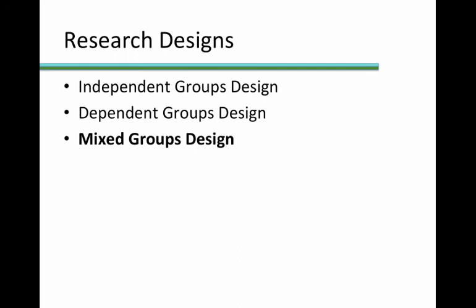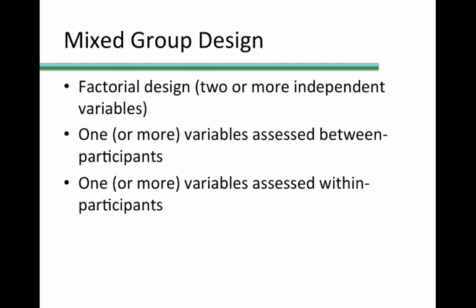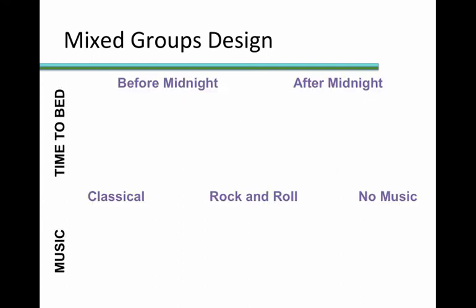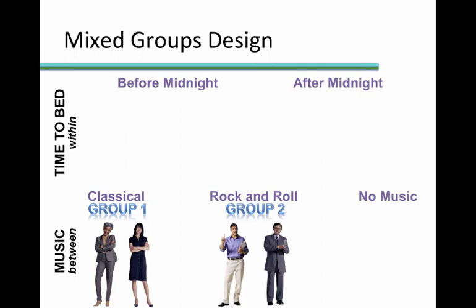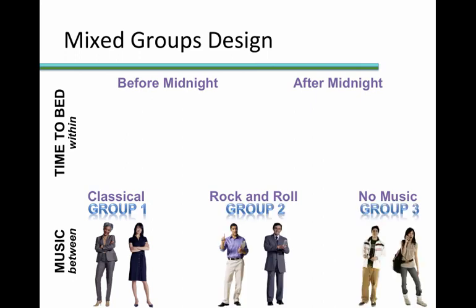Let's now talk about mixed group design. Sometimes we have study designs in which one or more variables are assessed between participants, as in an independent groups design, and another variable or variables assessed within participants, as in a dependent groups design. This is referred to as a mixed design. For example, we may assess music type between participants and time to bed within participants. This means we would have three groups of participants, one for each music type condition, and each participant would experience both conditions of the time to bed variable.